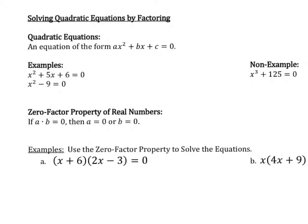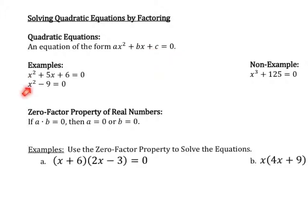Some examples of quadratic equations are these two examples — notice that they both have an x squared in them. Notice that this second equation, x squared minus 9, doesn't have the bx part, but it does have the c. The only requirement with these equations is that I do have an x squared. As long as the highest power on our variable is 2 and it's a polynomial, I know that it is a quadratic equation.